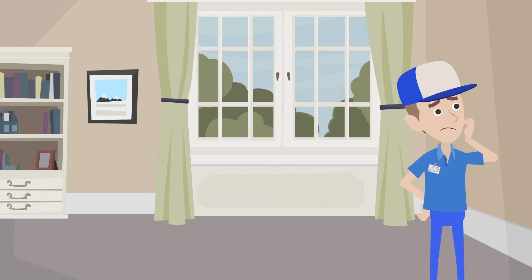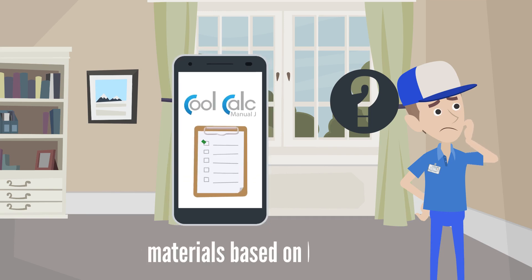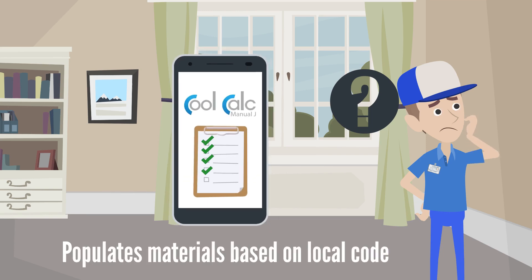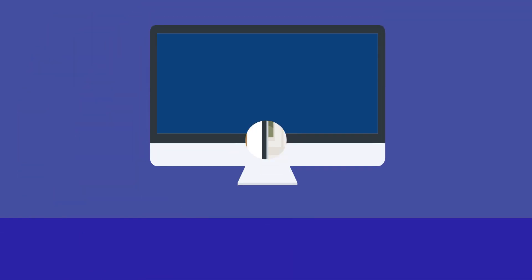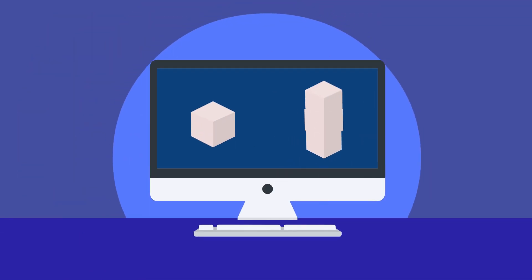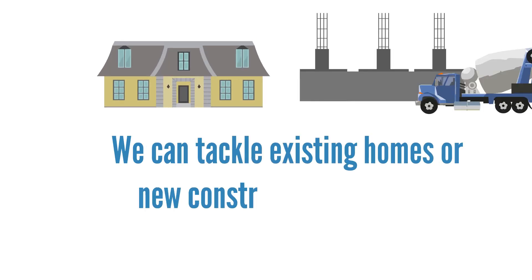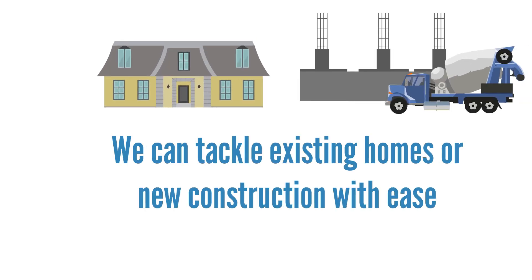Not sure about construction materials? No problem! CoolCalc will automatically select materials based on local code requirements enforced when the house was built. Since we are the only web-based solution that handles both block load and room-by-room calculations, we can tackle existing homes or new construction with ease.